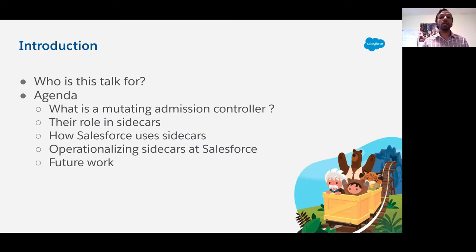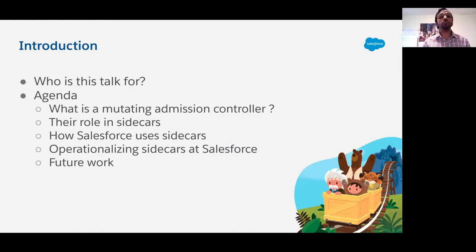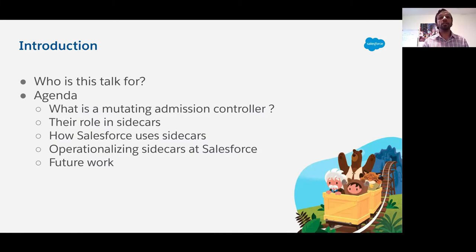We'll also look at our open source framework that makes it easy to add new sidecar use cases across teams. Mutating admission controllers are not without their own challenges, and we will look at what those are, what considerations we need to keep in mind when operating so many admission controllers, and how our continuous monitoring framework helps make it easy to operate these admission controllers in production. We'll also show some alternative ways of managing sidecars and lay out the recipe of how to choose between those and admission controllers.